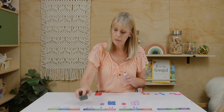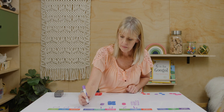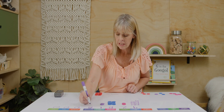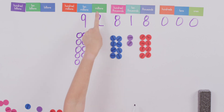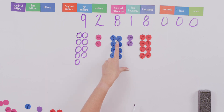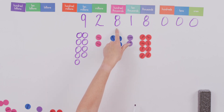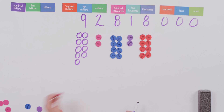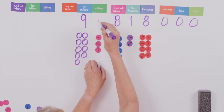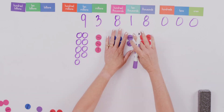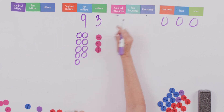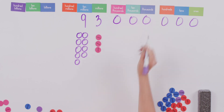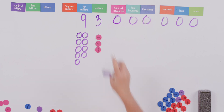Let's put our number back up and round to a different place — let's round to the millions. We find our millions spot right here, go next door, it's greater than five, so we're going to add one to our millions. That becomes a three, and then we take all these away. So we now have 93 million. That was rounding that number to the millions place.